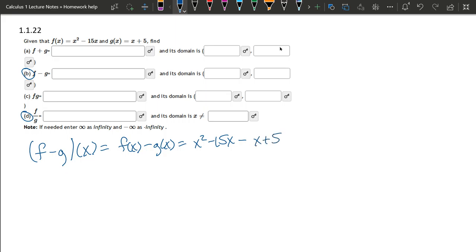Now, you should notice there's a mistake here. I really need to subtract the whole quantity x plus 5. And while we're grouping with parentheses, let's be consistent and group up the entire f function as well.